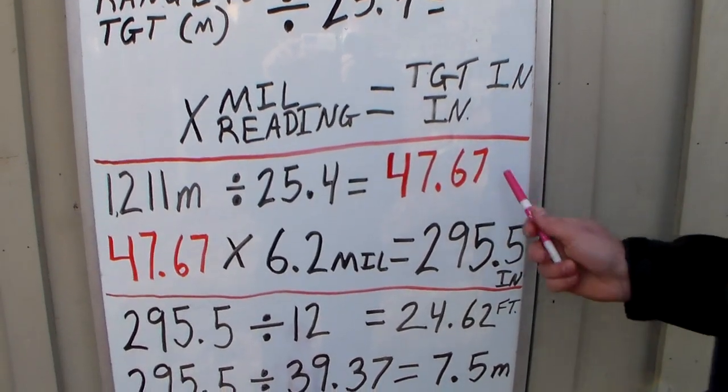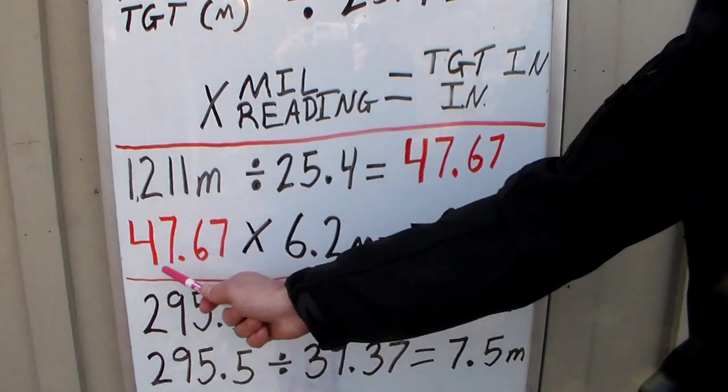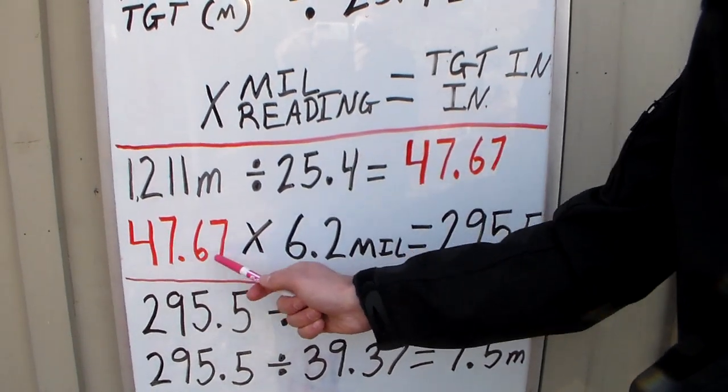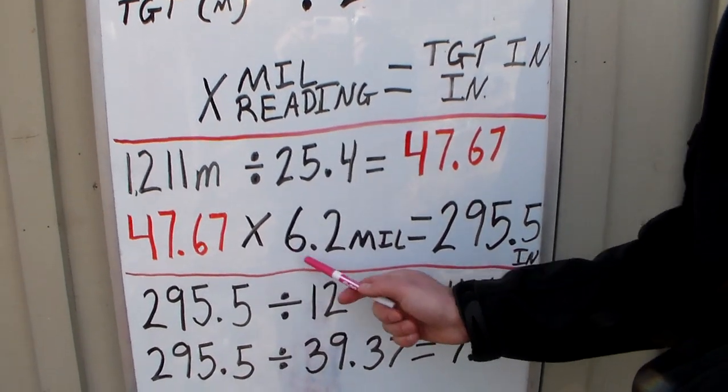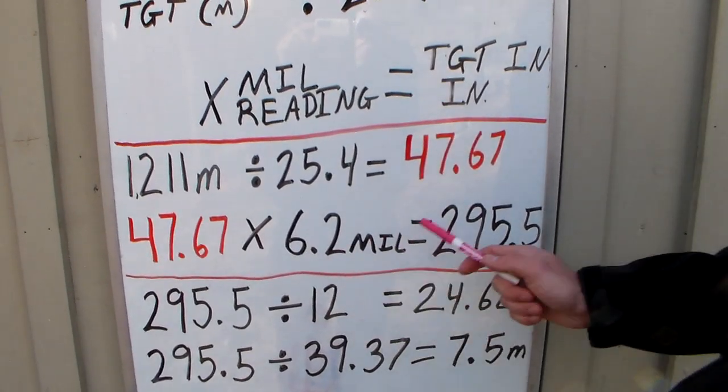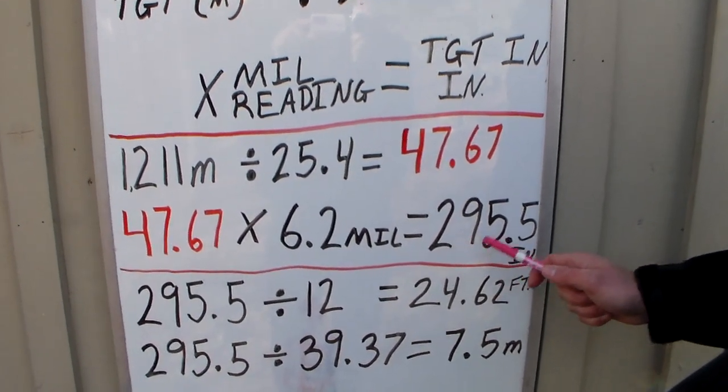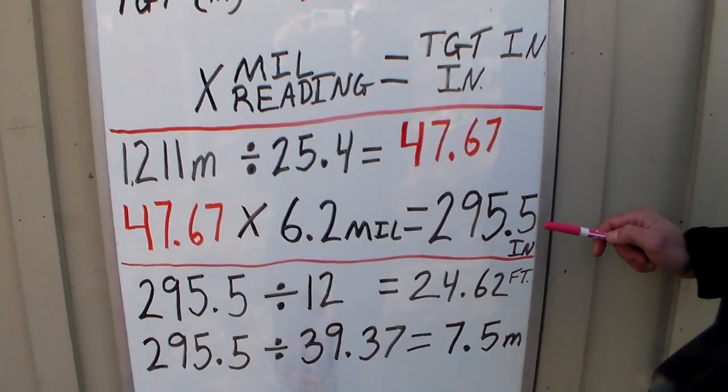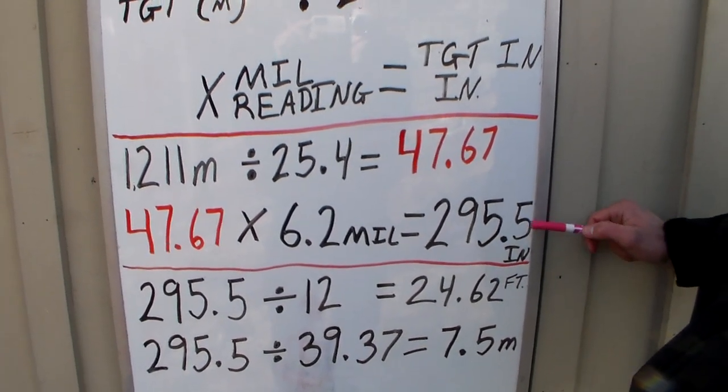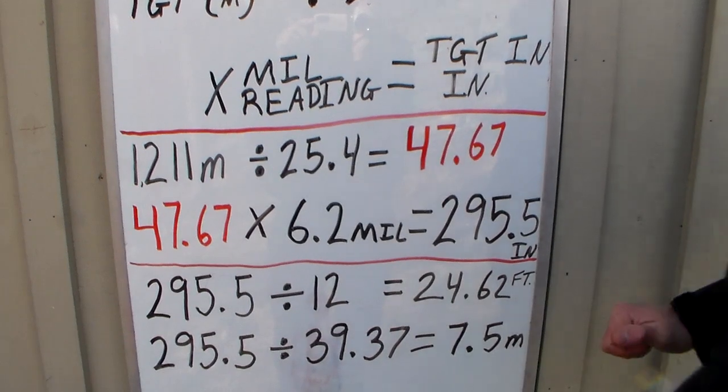That's the first half. Let's go on to the second. We take that 47.67 times our mill reading. I milled it in my reticle at 6.2 equals 295.5 inches. So now I know that building I'm looking at is 295.5 inches wide.